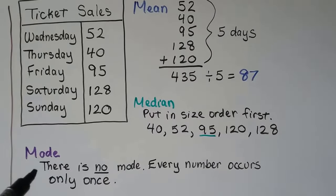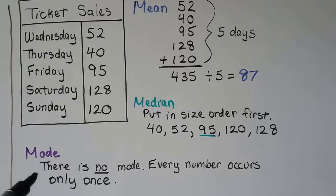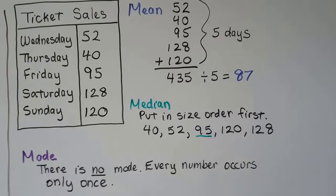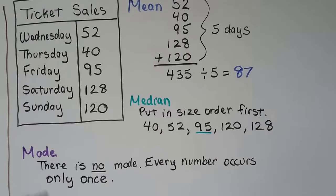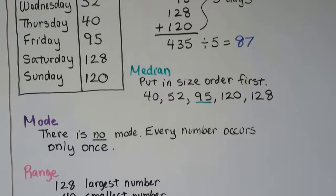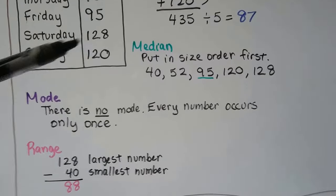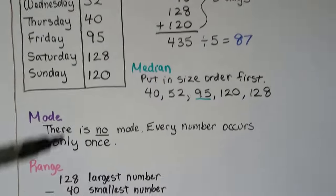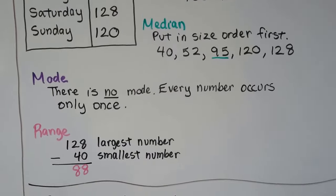For the mode, remember, the mode is the number that occurs the most. Well, they all occur only once. There is no number that occurs the most. So there's no mode. Look at that. There is no mode. The range, we take the 128 largest amount of tickets sold and 40, the smallest amount of tickets sold, and we get a range of 88.